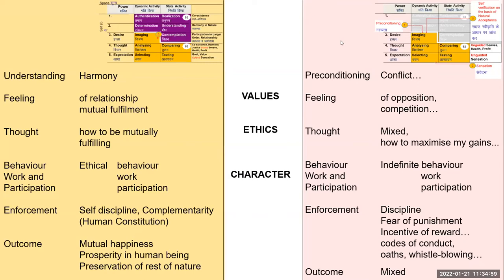Every one of us has this natural acceptance — to be in relationship, to live in harmony and coexistence. That natural acceptance doesn't go away; it is not corrupted. All we have to do is draw our own attention to it and start referring to it. Education has a major role to play in developing the character. The word 'enforcement' may not fit perfectly — we'll look for a better word — but go with the meaning of what is intended and not get stuck with the word.